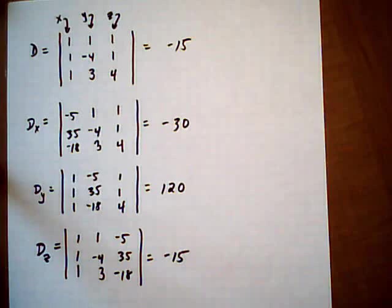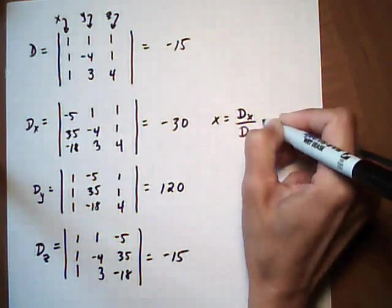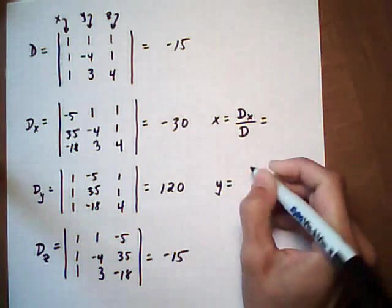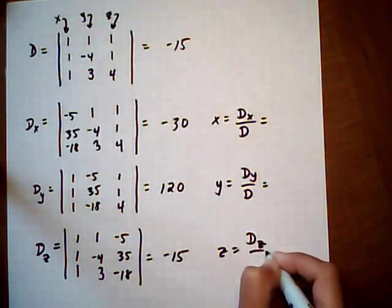And now we can find x, which is Dx over D, Dy over D, and Dz over D.